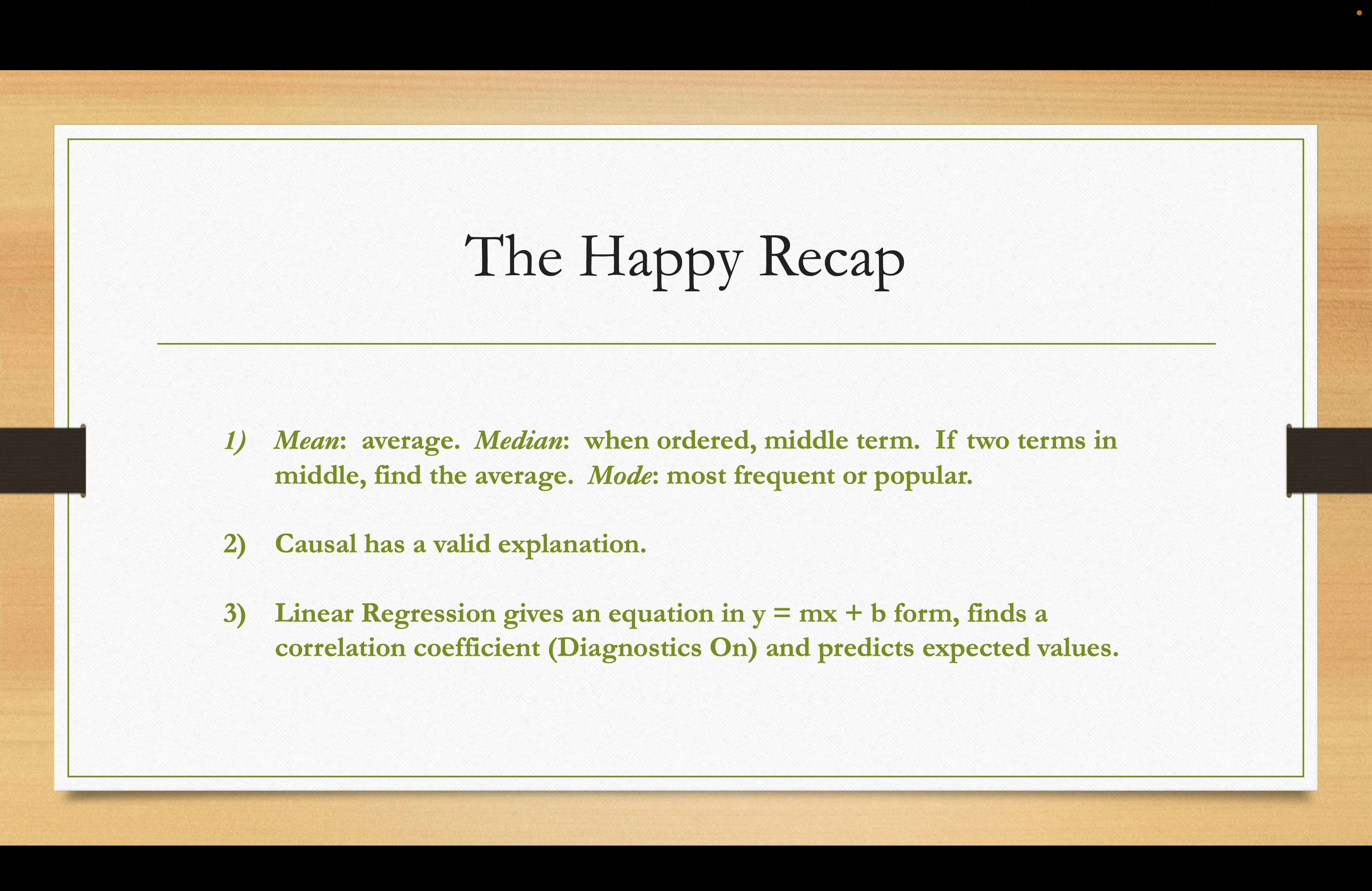To find the correlation coefficient you must make sure diagnostics is on on your calculator. The way you do that is you go on your graphing calculator to catalog, which is second zero, and then you just keep scrolling down until you see diagnostics on. Before you see diagnostics on you will see diagnostics off - don't pay attention to that one. Go to diagnostics on, turn it on, that will give you the correlation coefficient.